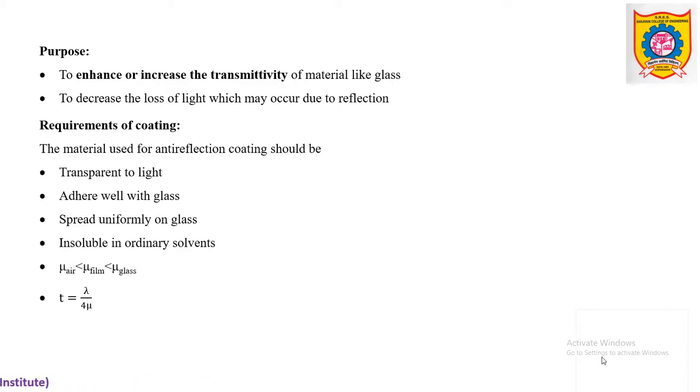There are certain requirements for the material to act as anti-reflecting coating. The material should be transparent to light. It should adhere well with glass. It should uniformly spread on glass so as to form a thin film of uniform thickness. It should not be soluble in ordinary solvents.